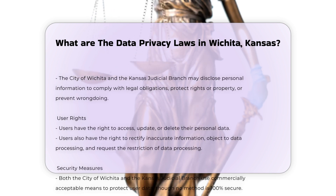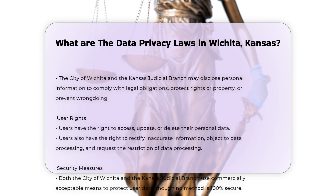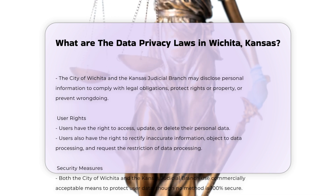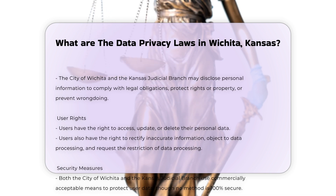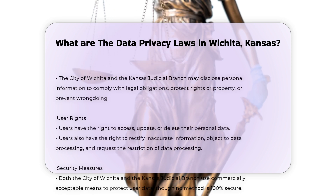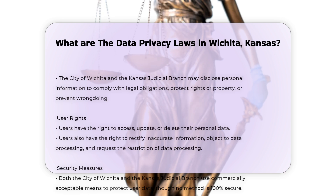Data Collection and Protection: When visiting the City of Wichita's website, personal information is only collected if you choose to provide it. The City uses secure server software, SSL, to encrypt personal data, ensuring it is protected during transmission. The City also uses this data only for the purposes approved by the user.